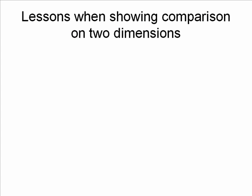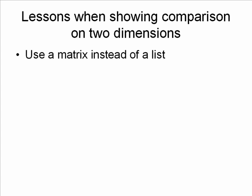So what are some of the lessons we can learn when showing comparisons on two dimensions? This is financial analysis, but it doesn't have to be. First lesson: instead of simply listing, use a matrix, because a matrix allows you to group the different dimensions and makes it easier for people to understand. If you've got a list, people try to go back and forth to interpret it. When you're using a table, certainly put the numbers in, but also use visuals.